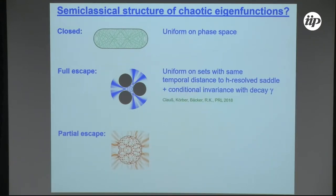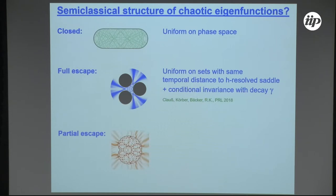What I want to present today is answers or suggestions for how these functions look like for systems with full escape. The answer we propose is that eigenfunctions are uniform on sets with the same temporal distance to the h-resolved, or Planck-cell-resolved, chaotic saddle, plus a second property — that they should be conditionally invariant with the desired decay rate. The new thing is this temporal distance. Another co-author here is Martin Carver, who finished his PhD a while ago.